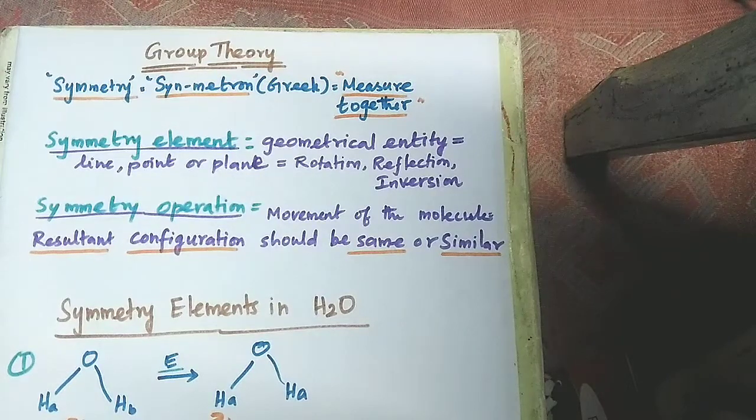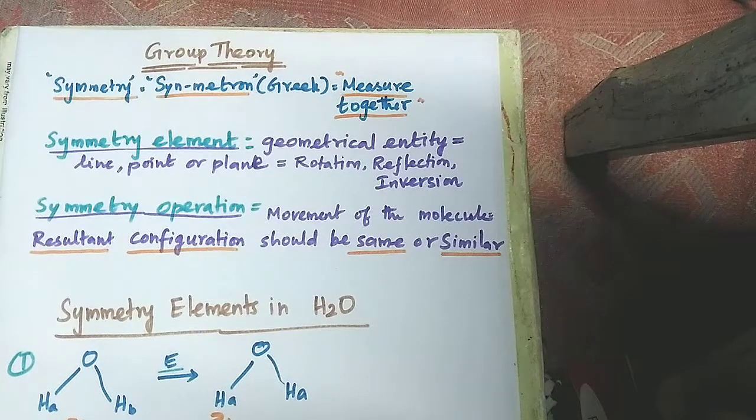The initial and final configurations should be the same or similar. If both configurations are the same or similar, we can say that the molecule or structure possesses symmetry. If they are not the same or similar, then that particular molecule does not possess any symmetry.